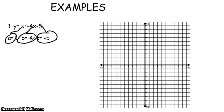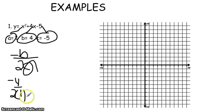Then you find the x coordinate by plugging the numbers into the equation, negative b over 2a. So it would be negative 4 over 2 times 1, which equals negative 4 over 2, and can be reduced to negative 2.